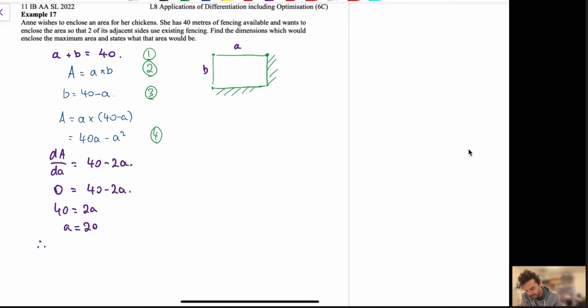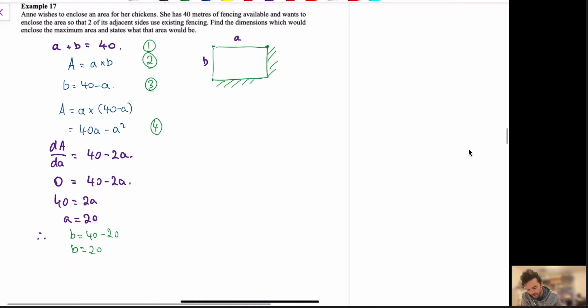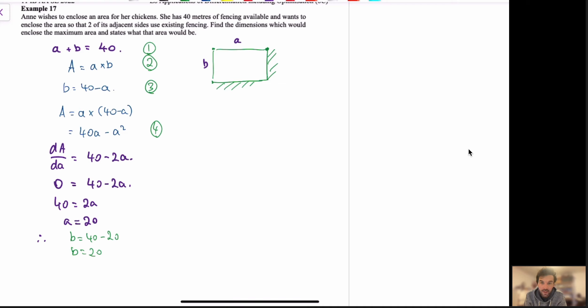Therefore, we can sub in. So, now we've got A is equal to 20 and B is equal to 20. Now, it says, find the dimensions which would enclose the maximum area. So, we can go max area, and we can answer this question now. A is equal to 20. B is equal to 20. Area is equal to 400. Now, let's answer this in context. So, the pen size is 20 metres by 20 metres, which makes a maximum area of 400 metres squared.